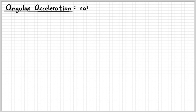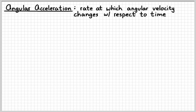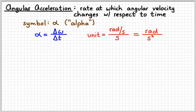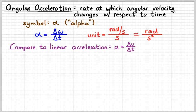The last thing to discuss is angular acceleration. Just like before, we go from linear acceleration to angular acceleration by replacing velocity with angular velocity. The symbol for angular acceleration is the Greek letter alpha. Alpha equals the change in omega over the change in time. The unit is radians per second squared. Compare: linear acceleration is change in velocity over time; angular acceleration is change in angular velocity over time. There's really nothing new here — we're just redefining it for a rotating object.